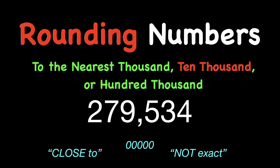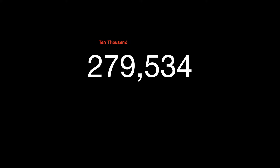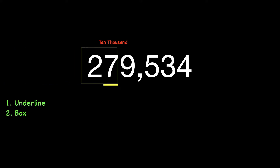Our first step is to pick the place value. So for example, let's round this number to the nearest ten thousand. The ten thousand digit is the seven, and our steps are to underline our place value, which is the seven, then box the seven and the next number over.